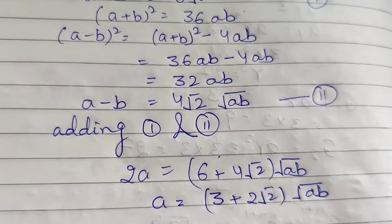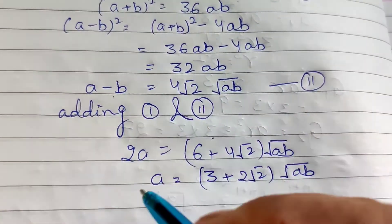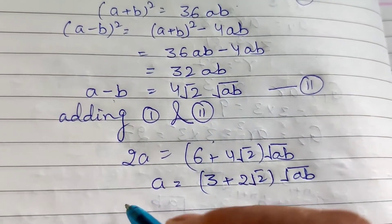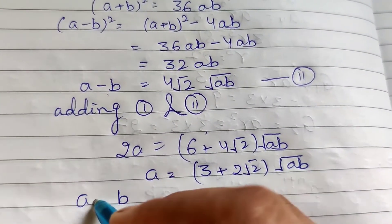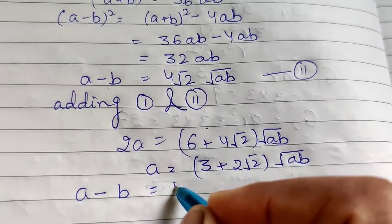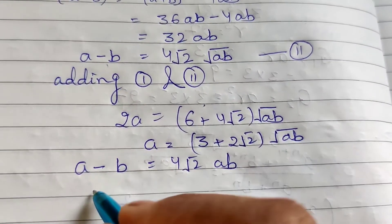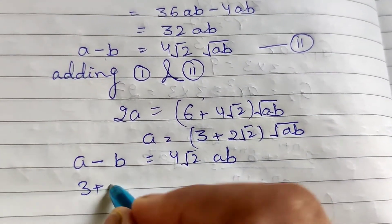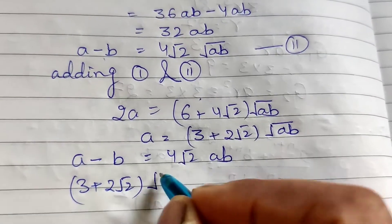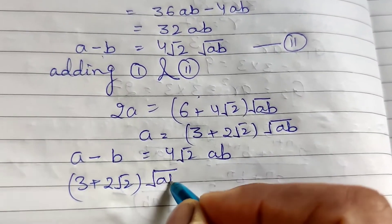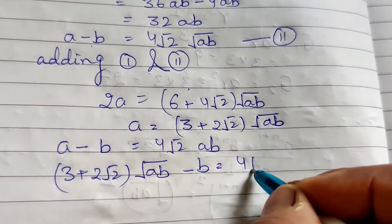Now putting the value of a into equation 2: a - b = 4√2·√(ab), substituting a = (3 + 2√2)·√(ab), so (3 + 2√2)·√(ab) - b = 4√2·√(ab).